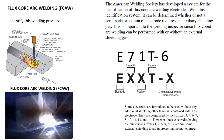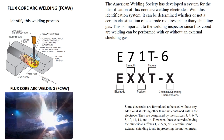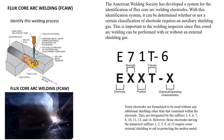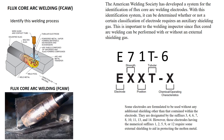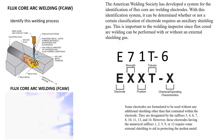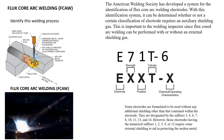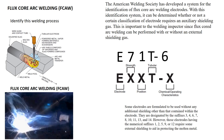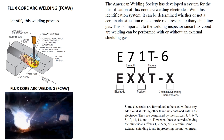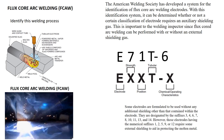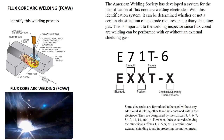However, those electrodes having suffixes 1, 2, 5, 9, or 12 require some type of external shielding gas to aid in protecting the molten metal.